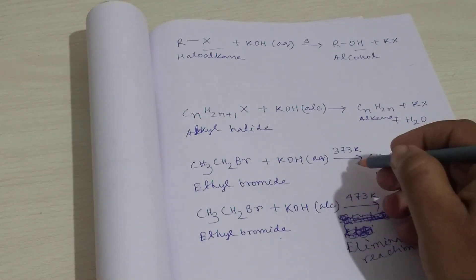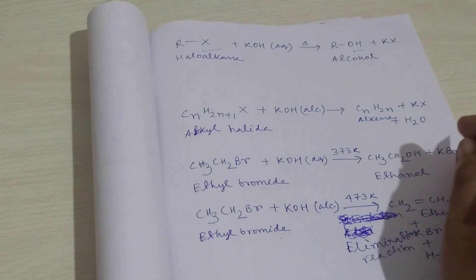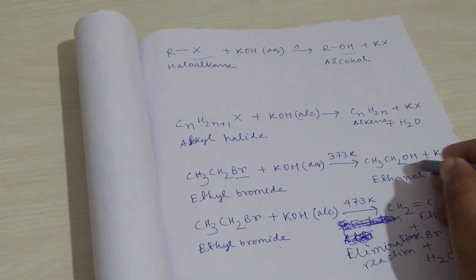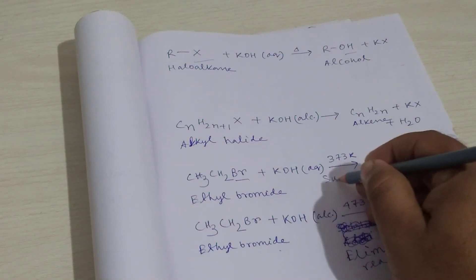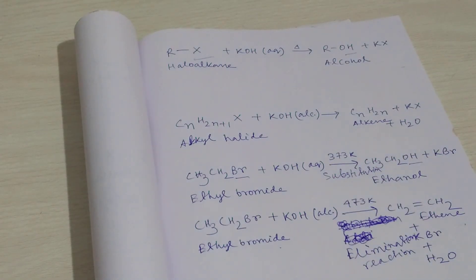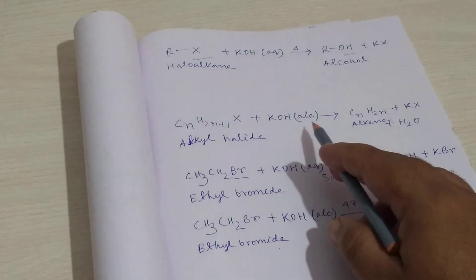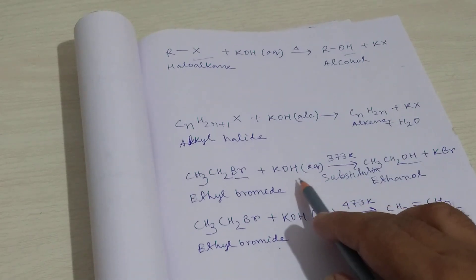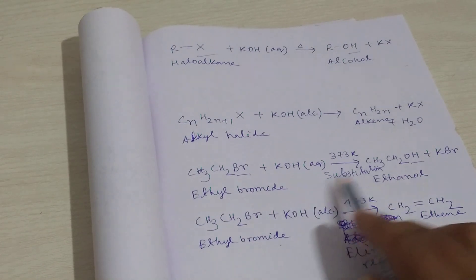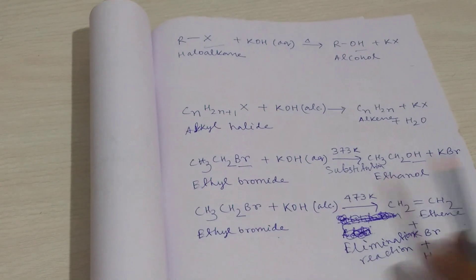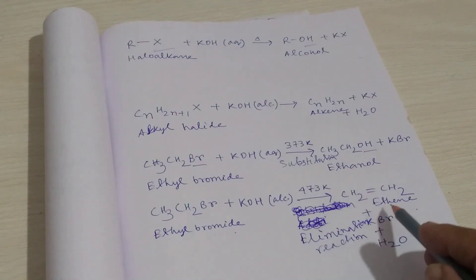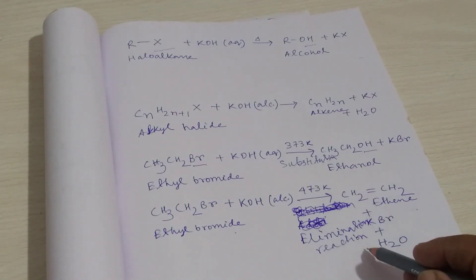For the case of ethyl bromide reacting with aqueous potassium hydroxide, replacement of bromine occurs — this is a substitution reaction, specifically a nucleophilic substitution reaction. But when alcoholic potassium hydroxide reacts with ethyl bromide, it gives an elimination reaction.